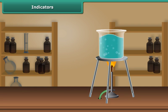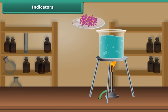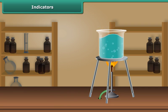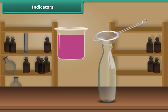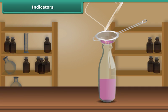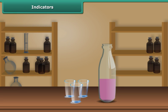Heat until the water becomes warm. Then add petals of china rose to this warm water. Keep the mixture for some time until the water becomes colored. Filter this purple-red water into a bottle using a tea strainer. This purple-red solution is your indicator.